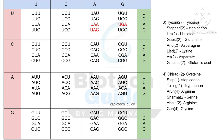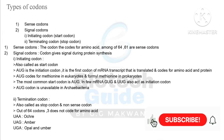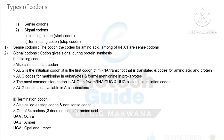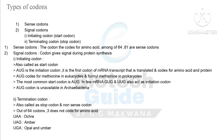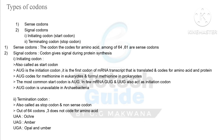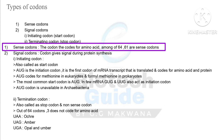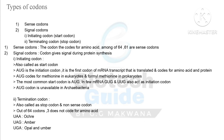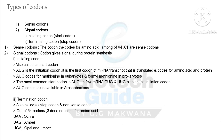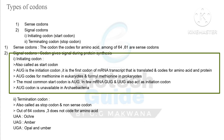At the end we are going to discuss types of codon. Basically two kinds of codons exist: sense codons and signal codons. Signal codons are further classified into initiating codons (start codons) and terminating codons (stop codons). Sense codons are the codons that code for amino acids — out of 64, 61 are sense codons. Signal codons give a signal during protein synthesis. The initiating codon, also called start codon, is AUG — it is the first codon of the mRNA transcript that is translated and codes for an amino acid in a protein.